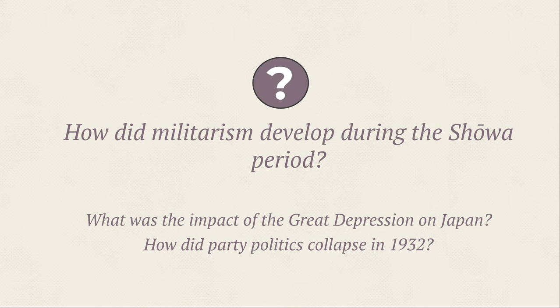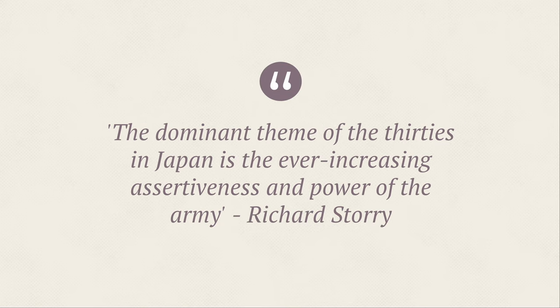The sub-questions we'll examine are: what was the impact of the Great Depression on Japan, and how did party politics collapse in 1932? To give a sense of the period, historian Richard Story states that the dominant theme of the 1930s in Japan is the ever-increasing assertiveness and power of the army — a real rise of militarism at the forefront of everything happening during this period.